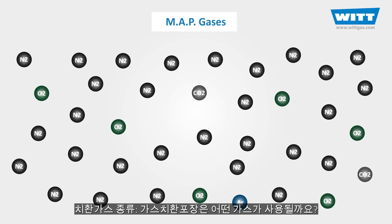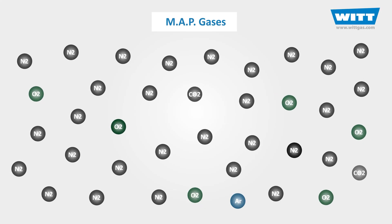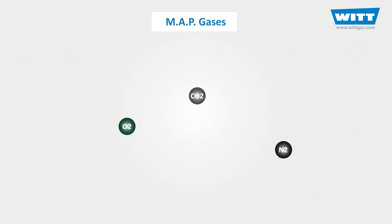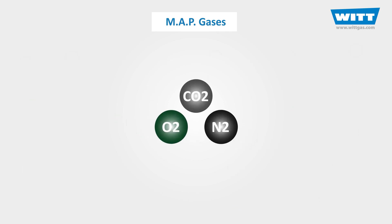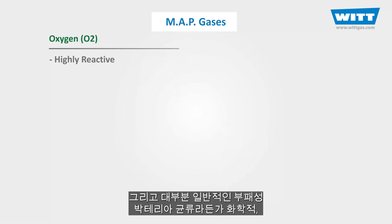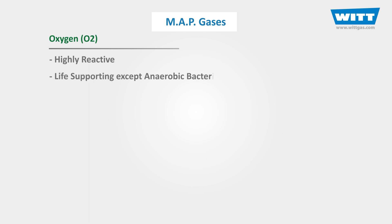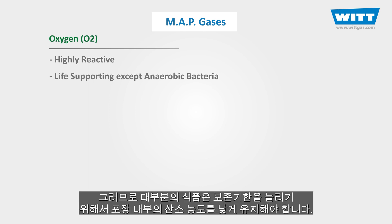So what are these gases used for MAP? All of them come from the air. The first one is oxygen (O2). Oxygen is highly reactive, and most common spoilage bacteria, fungi, and chemical and biological reactions require oxygen to live and grow. Therefore, to increase the shelf life of most foods, the pack atmosphere should contain a low concentration of oxygen.